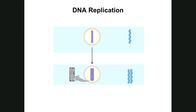Whenever cell division occurs — whether it's the cell cycle involving the mitotic phase from chapter 12 or the meiotic phase from chapter 13 — before the cell physically starts to divide from one into two cells, the DNA contained in the nucleus of these eukaryotic cells has to be replicated. Replication means making an identical copy of a pre-existing molecule of DNA.